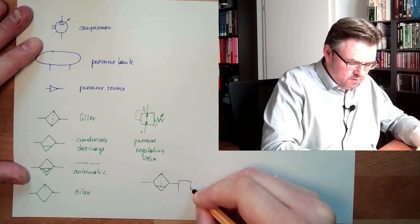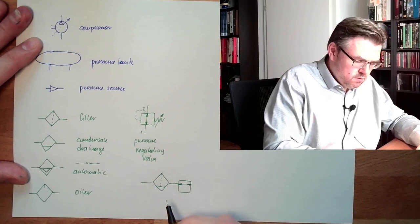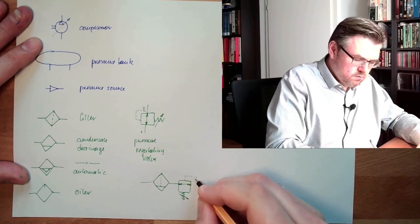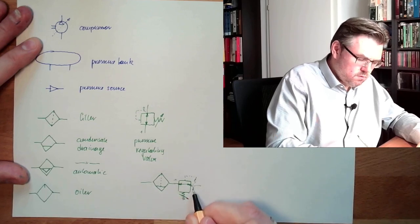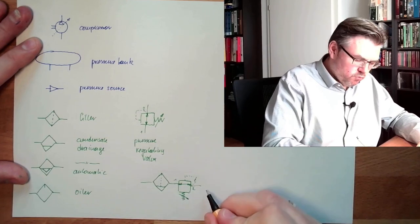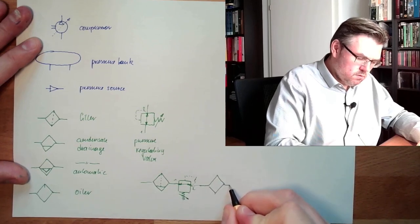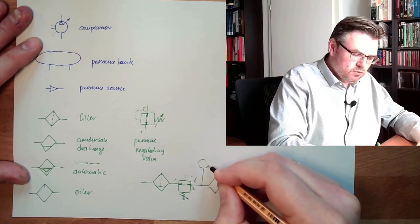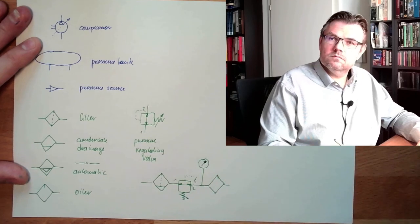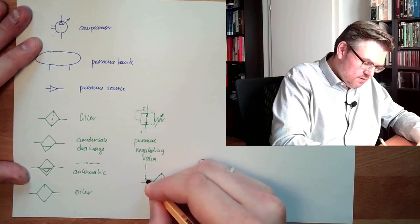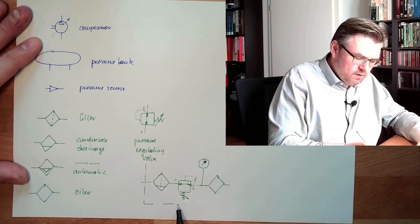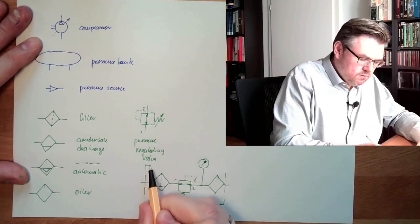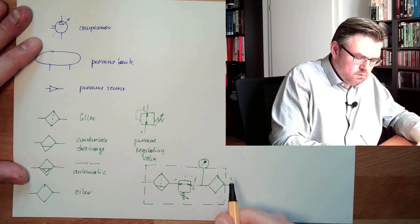Then we have pressure regulating valve. And then we might have also an oiler. And to be able to adjust the pressure here, there is usually also some sort of pressure gauge. This is often grouped together in one physical element, the treatment part.